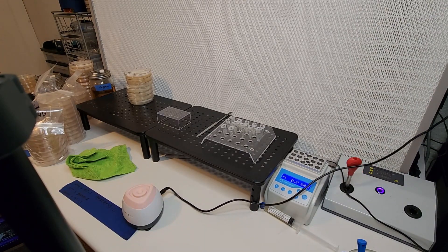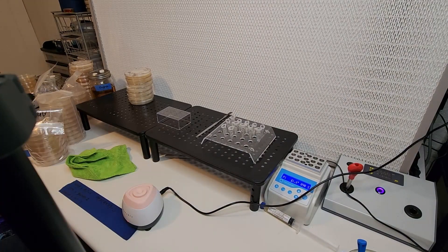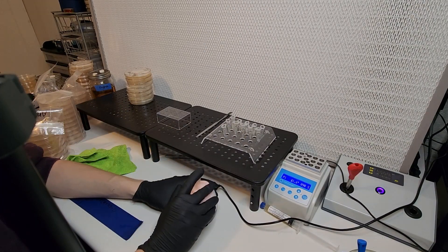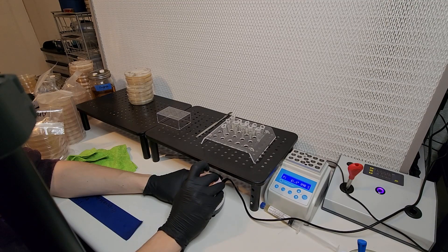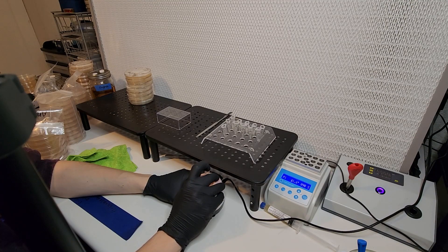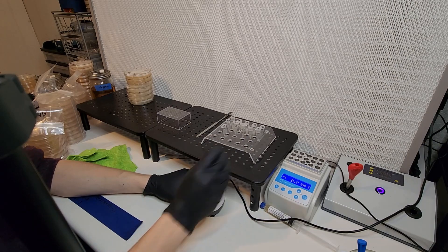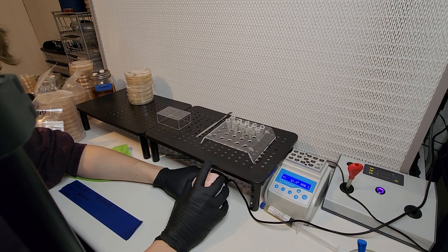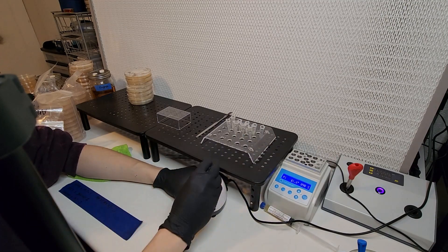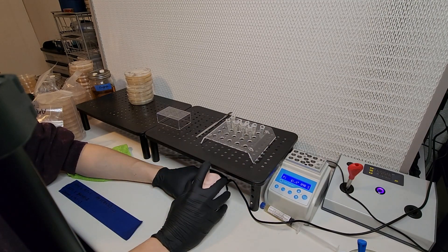This here is a makeup vortexer. It's a cheap version of a lab tool that's used to vortex these tubes to mix things up. You can buy these for cosmetics for like 60 to 80 bucks, something like that. Very affordable and they work fantastically well for mixing things up.